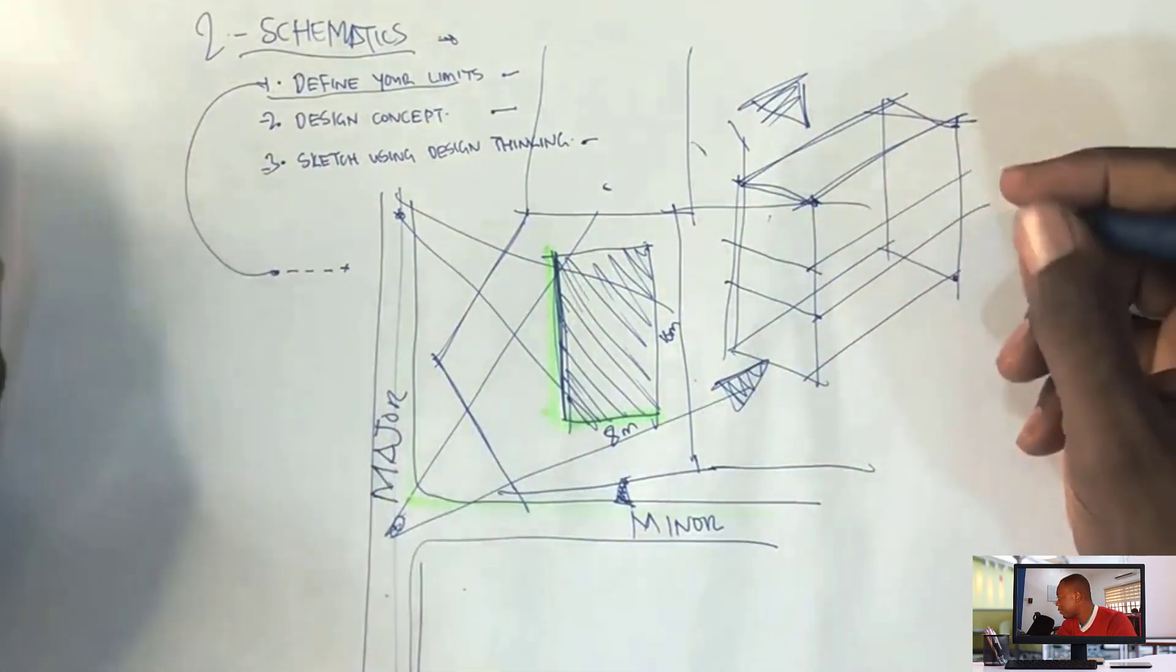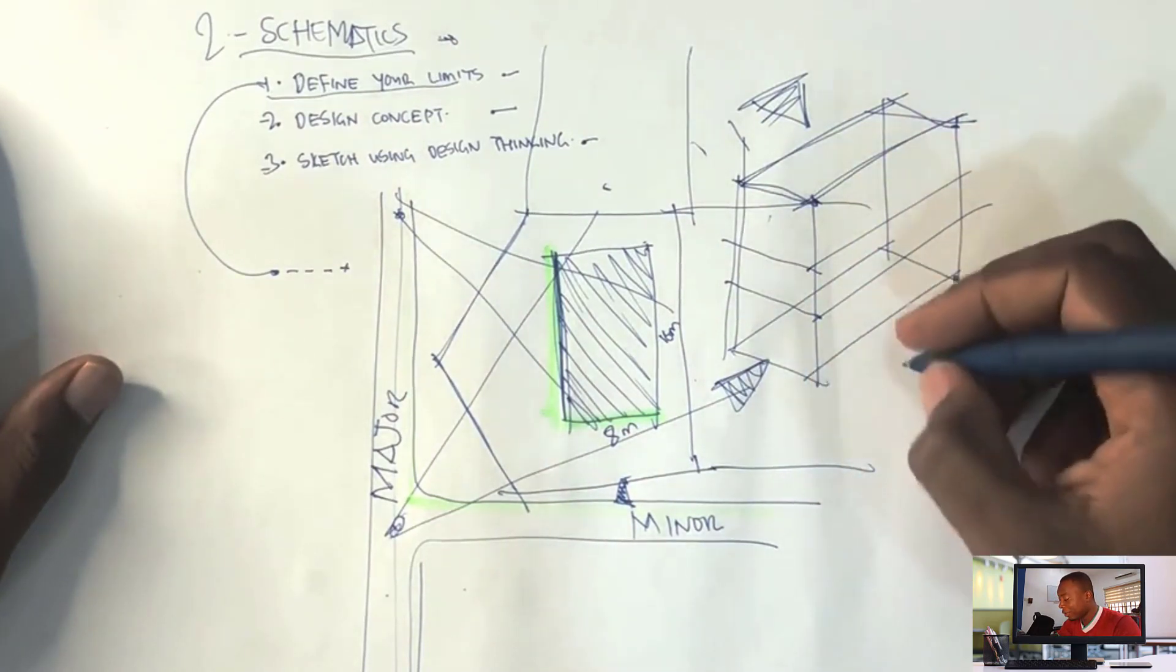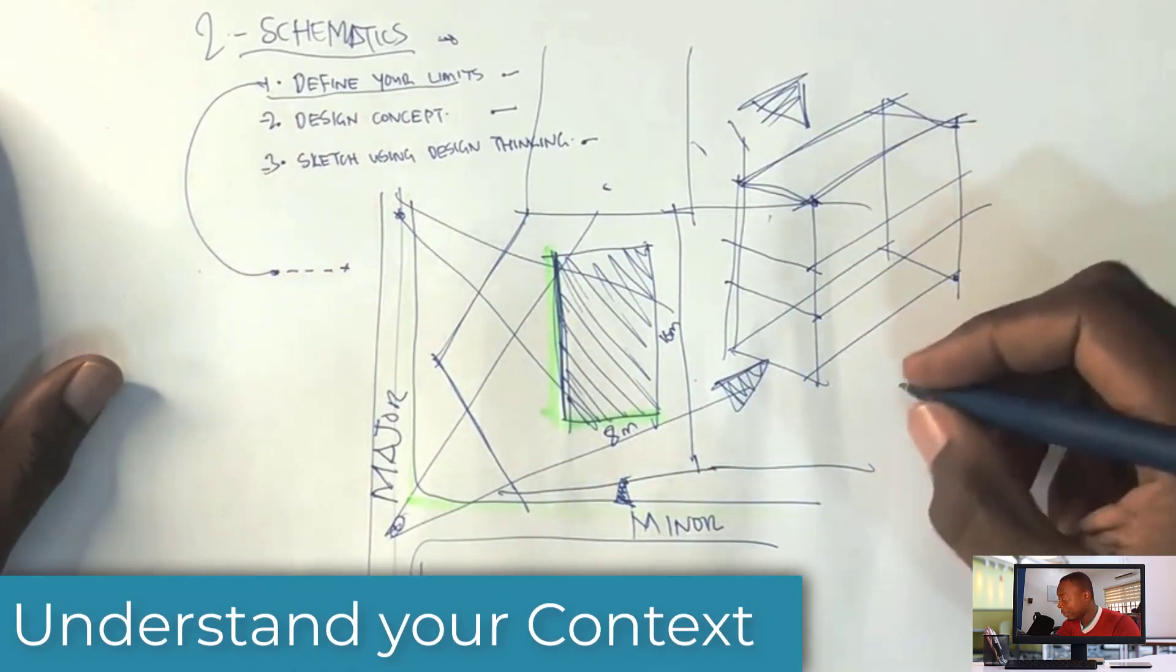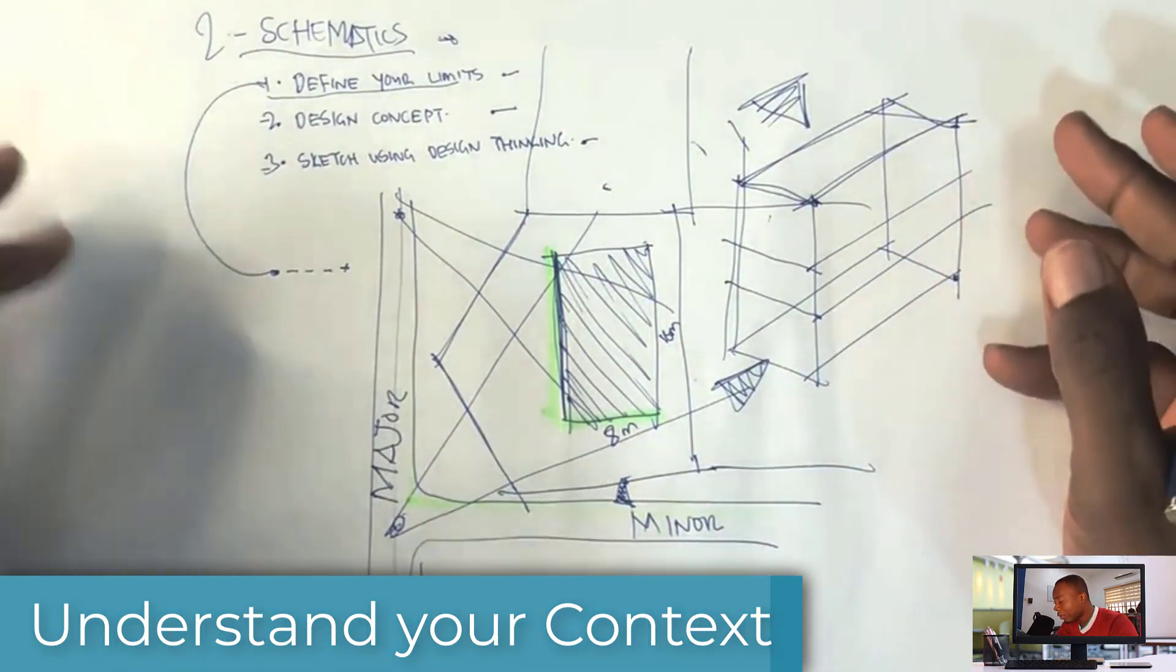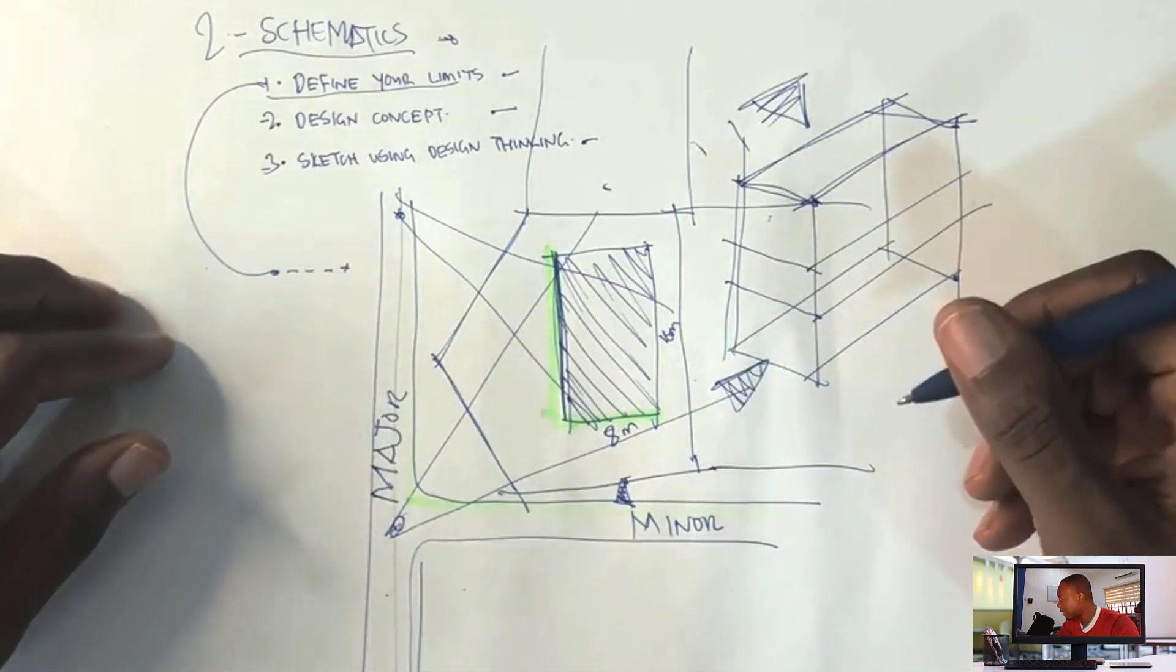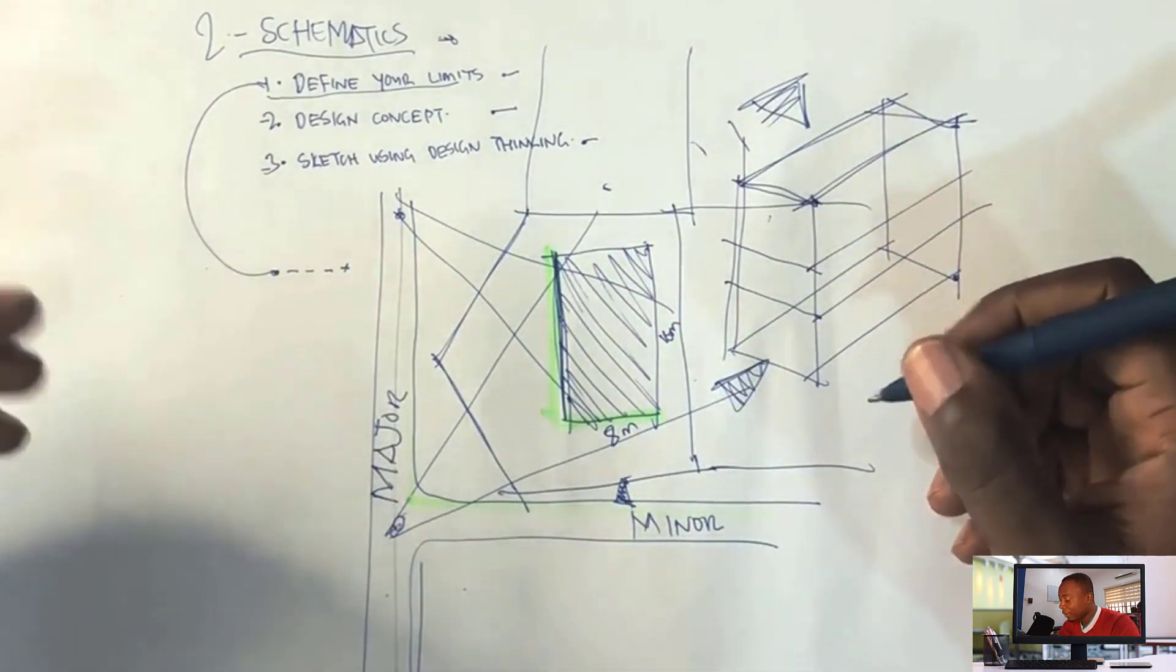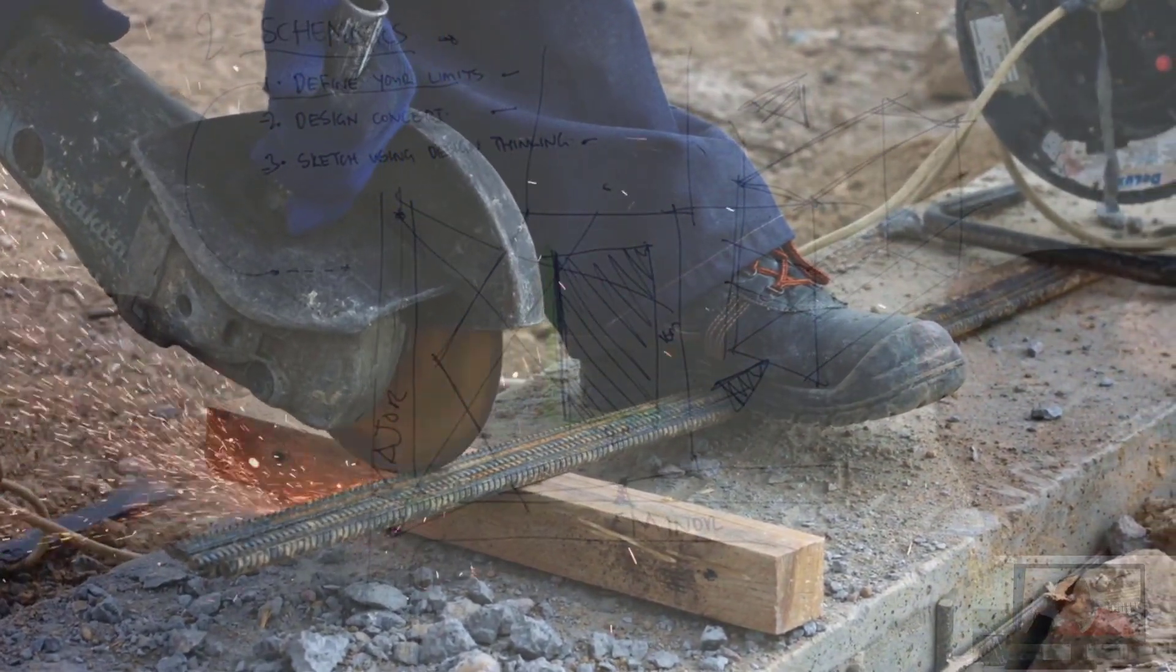The next thing you want to do is understand your context, and this is very important, still under your limits. You want to know the cultural limitations that will affect your design.